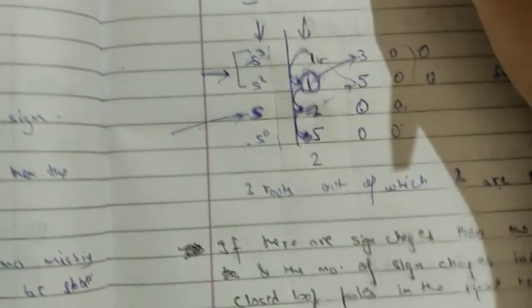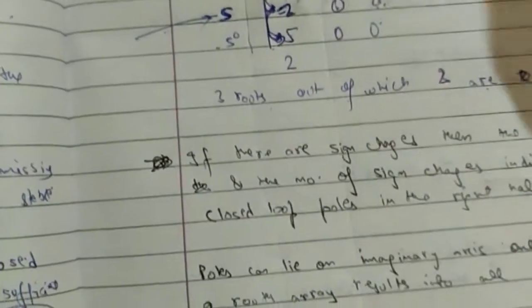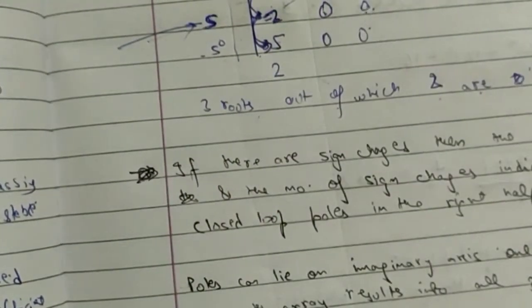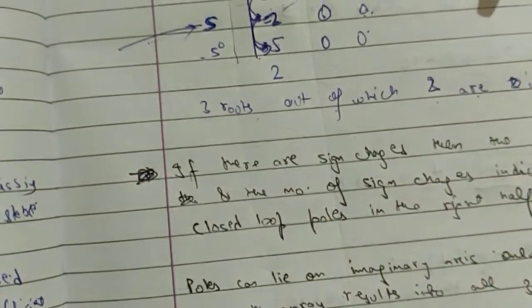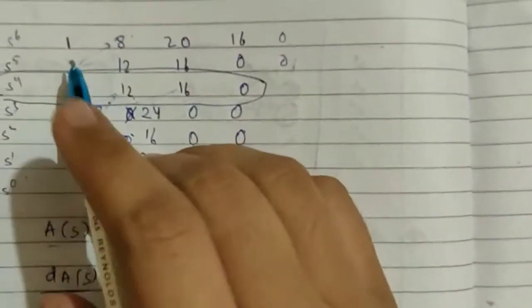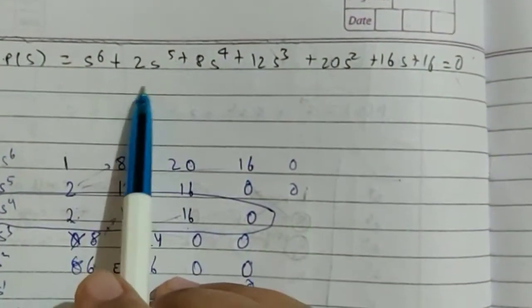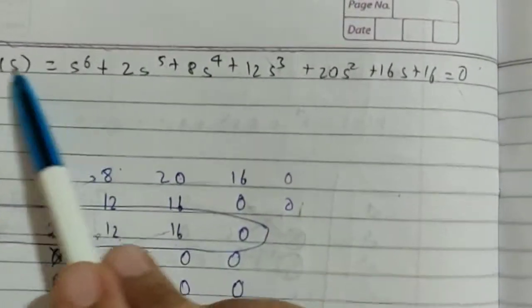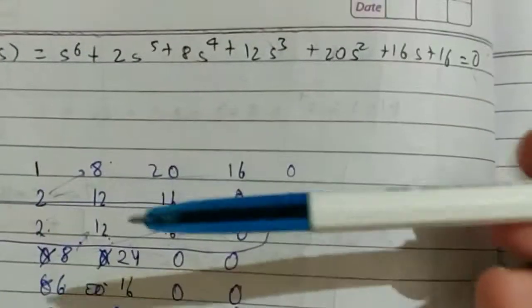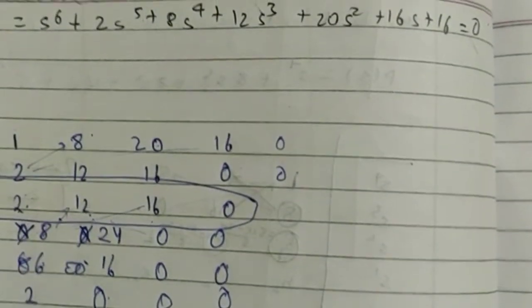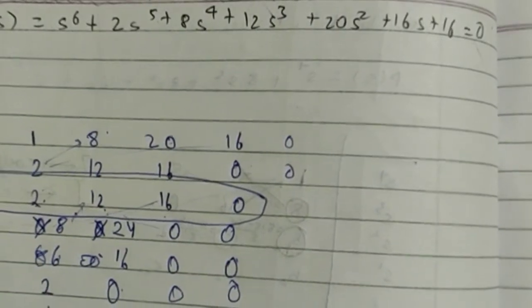For stability, all elements of the first column must have the same sign, but here the sign is different — so the system is unstable. The number of sign changes in the first column tells us how many roots the characteristic equation has in the right half plane. The characteristic equation has power 3, so 3 total roots. There are 2 sign changes (plus to minus, then minus to plus), meaning 2 poles are in the right half plane and 1 is in the left half plane. This was the Routh-Hurwitz criterion — the full topic including special cases will be covered in the next video.